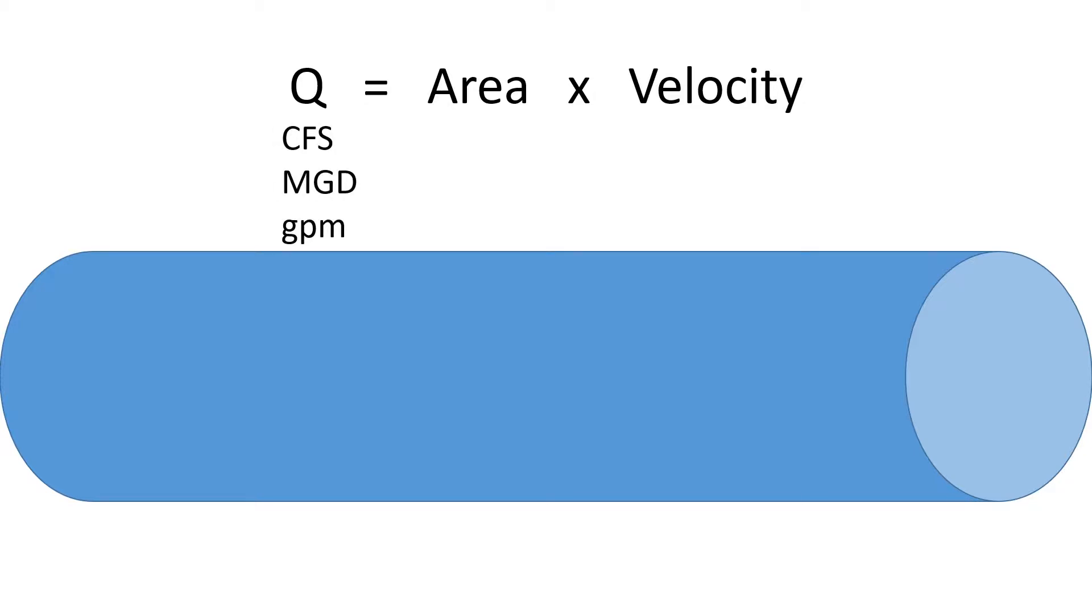Typical units for Q are cubic feet per second, MGD, and gallons per minute.